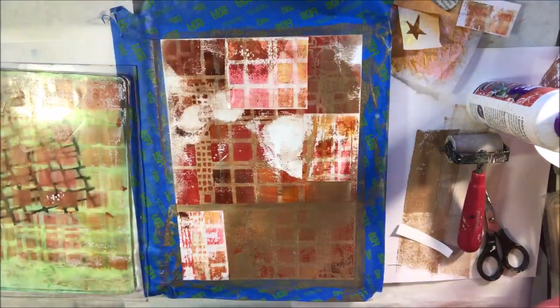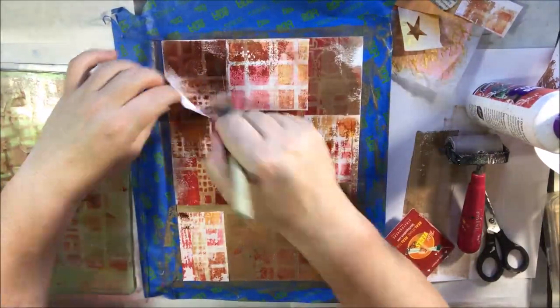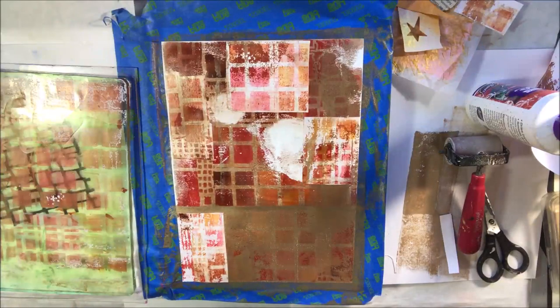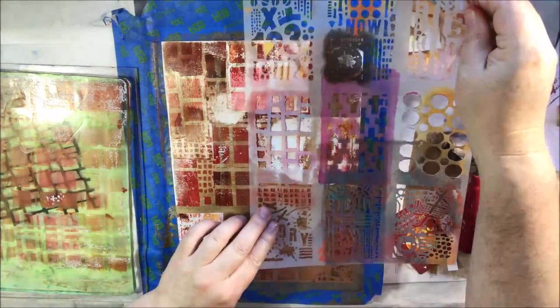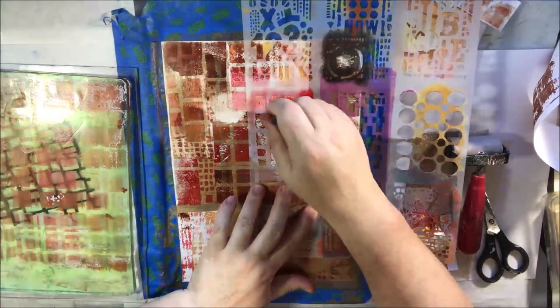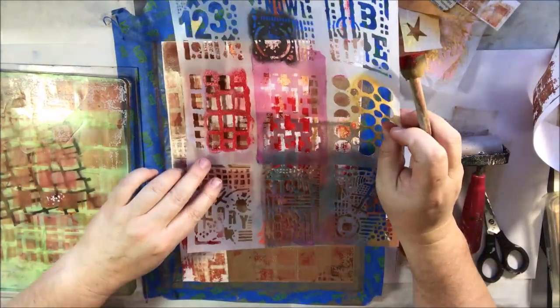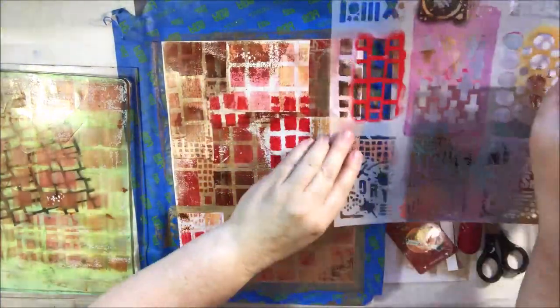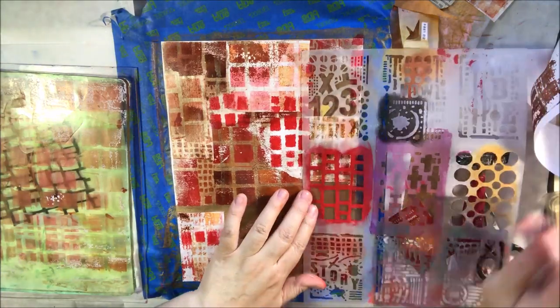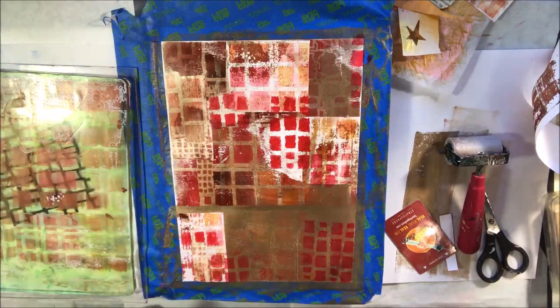That's what a matte medium does—it makes things matte. Some people might think that's going to make your page sticky and it's going to stick to the page next to it when you close the book. That is true, but if you use a beeswax product like Daddy Van's furniture polish, the unscented one with a citrusy note, I just use a tiny bit of that on a paper towel and rub it over my page once it's all dry. That prevents that page from sticking to the one next to it.